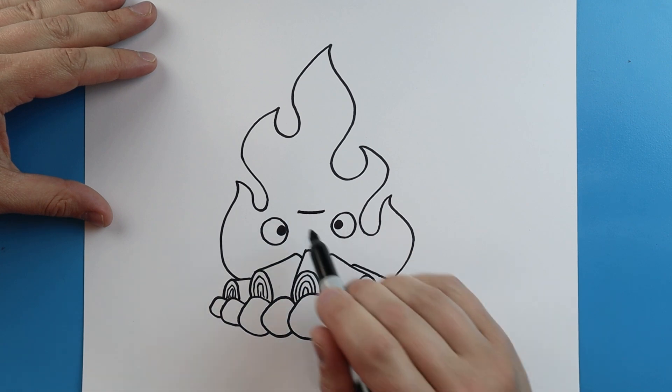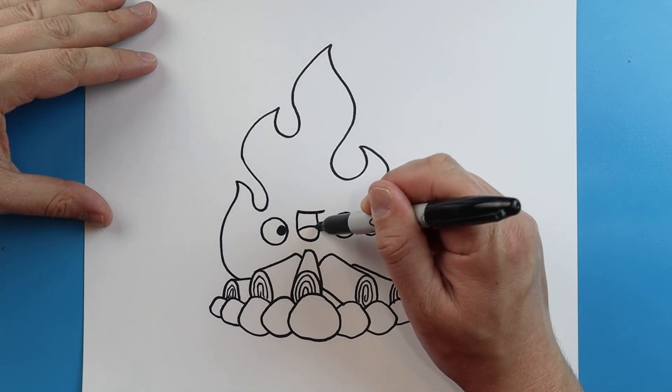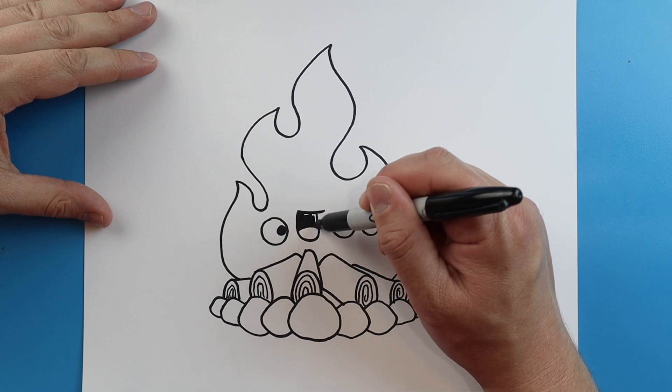Then we'll make a line that comes across and a line is going to go down and up for a little smile. Put a little curved line across for the tongue, then I'm just going to go ahead and color in the inside.